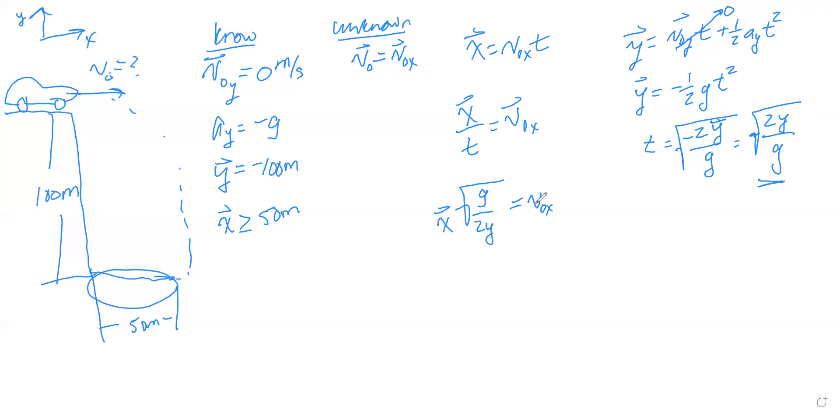Now we can plug in our values. Since x has to be greater than or equal to 50 meters, when we plug in x equals 50, that will be the minimum. So v_initial_x will have to be greater than or equal to whatever this term is, because as x increases, v_x increases, but if x decreases below 50 that would require a decrease in v_initial_x.